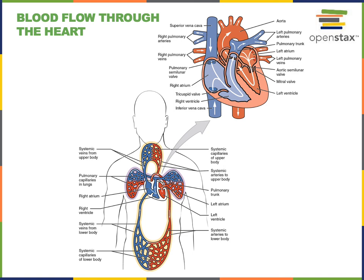The coronary sinus then drains this deoxygenated blood into the right atrium. The systemic circuit essentially begins with the left ventricle and ends with the right atrium.